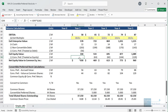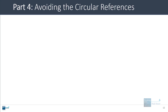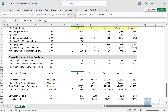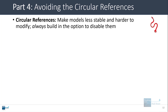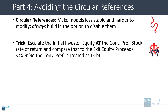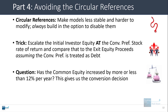There is one additional issue: the circular reference makes models less stable and harder to modify, so you always want to build in the option to disable it. One trick is to look at the initial investor equity (initial common equity), escalate it at the convertible preferred coupon rate of return, and then compare that number to the exit equity proceeds assuming convertible preferred is treated as debt. If the exit proceed number is greater, we should convert to common; otherwise we stay in preferred. It's a quick approximation of whether the common equity portion is earning at least a 12% IRR.